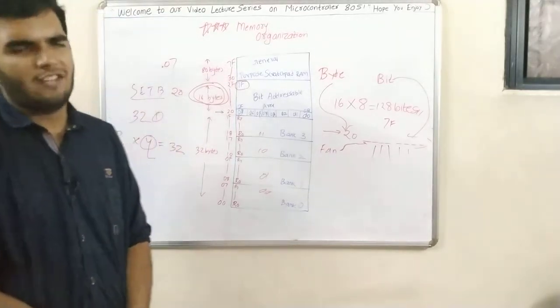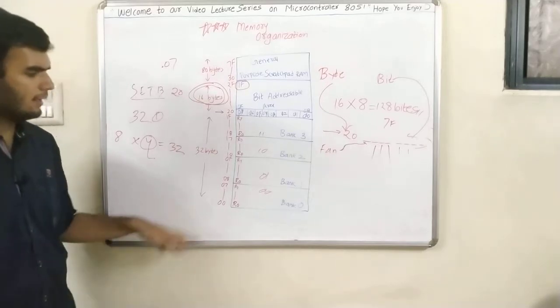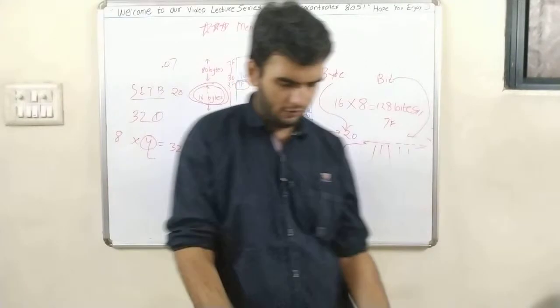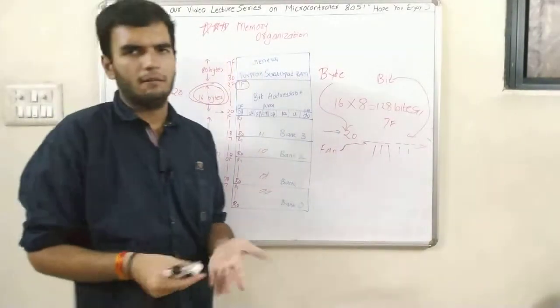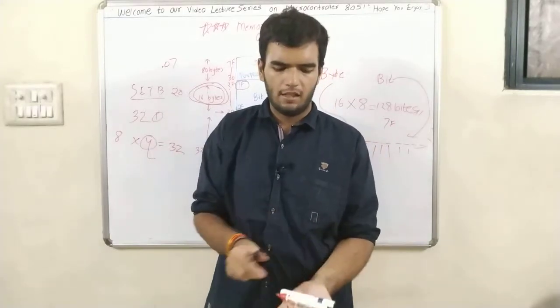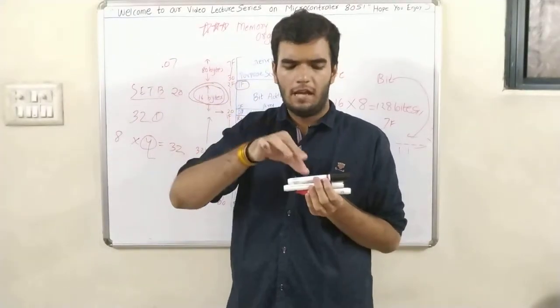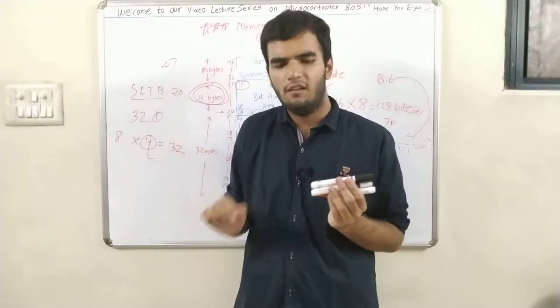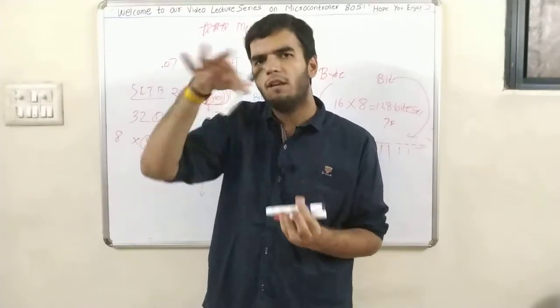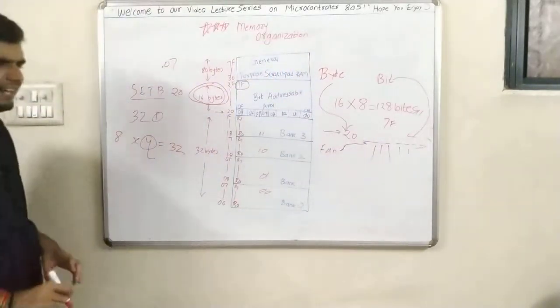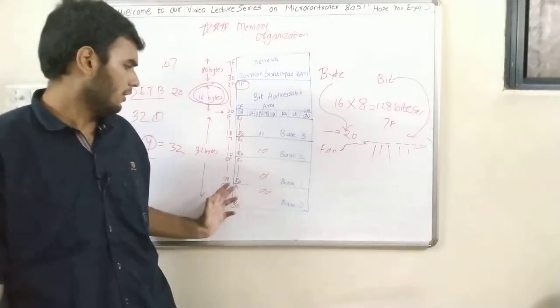Last thing is what is the stack. Stack is something which operates in last in first out manner. Suppose I keep this marker here, above this I keep this marker, and I keep this marker. So they got placed as one, two, three, but how I will remove them? I will remove them as three, two, one. Which was last in will become first out. This is the stack. When we enter something into stack it is called push operation, when we take out something from stack it is called pop operation.